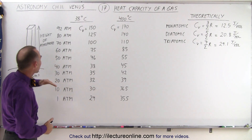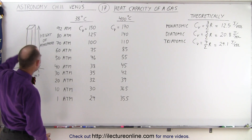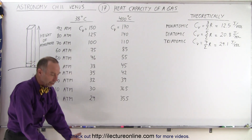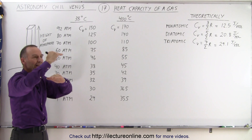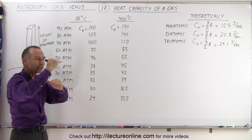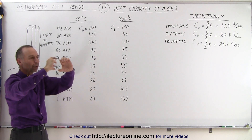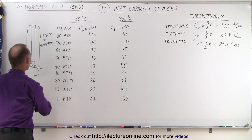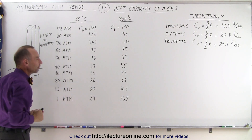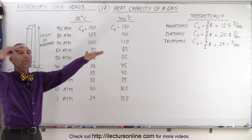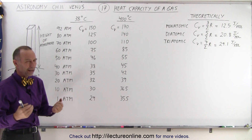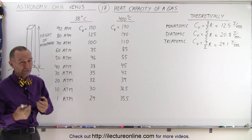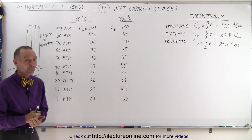Now we can go back and try to calculate the heat content in a column of atmosphere. We'll take an area of one square meter going all the way up to the top of the atmosphere, divide it into little slices, and take the average pressure and temperature for different regions of the atmosphere, then add it all up to find the total energy content in that column. Then we'll multiply that by the entire surface area of Venus to figure out how much energy is contained within the entire atmosphere of Venus.